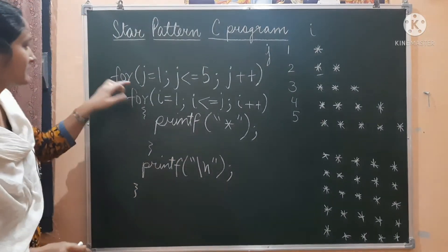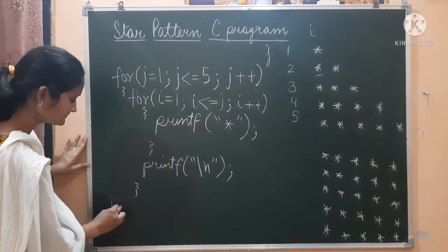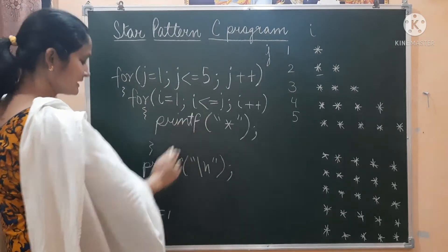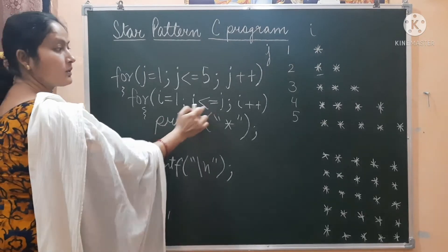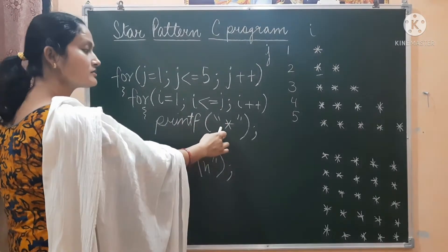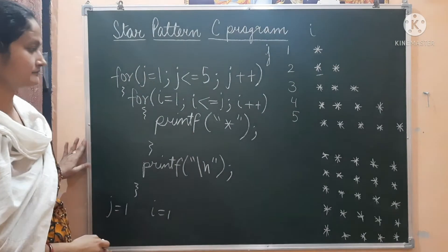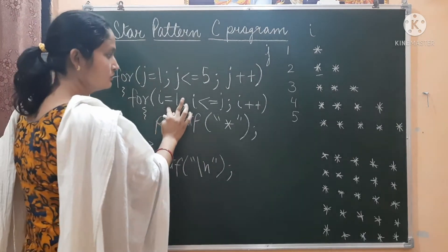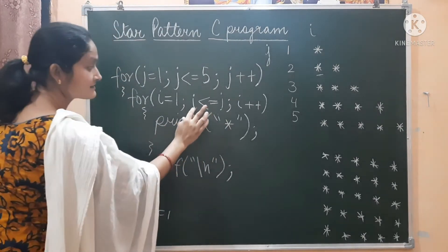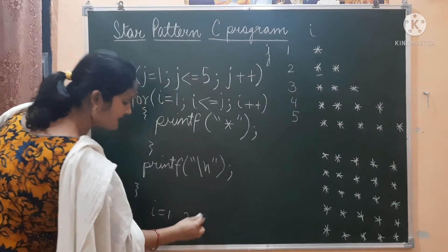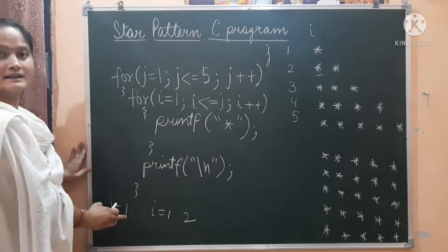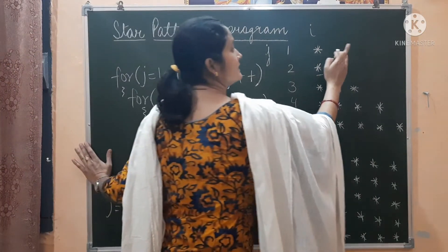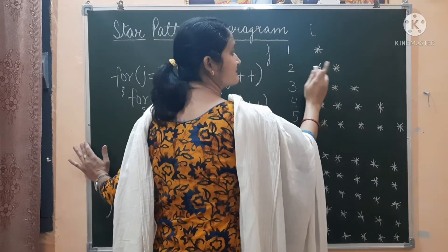Let's see how it works. First time J is 1, control will enter the loop. I is 1, condition will be checked — is 1 less than or equals to 1? Yes, true. So a star will be printed. Next time I is updated to 2. Again the comparison: is 2 less than or equals to 1? Condition gets false, so this star will not be printed. The newline will execute, and your cursor will come to the next position.